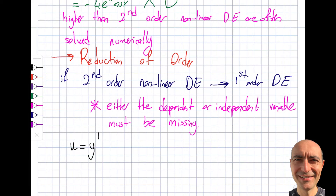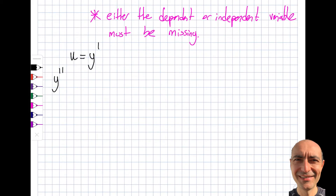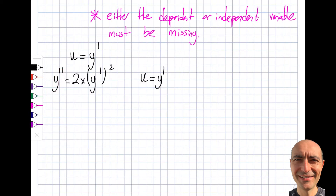Here's an example. This equation is nonlinear because y' is squared, and you can see there is an x but no standalone y. So I use u = y', which means u' = y''. Plugging in, y'' = u' = 2x·(y')² = 2x·u². Since u' is du/dx — x is the independent variable — I can write du/dx = 2x·u², which is separable.